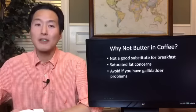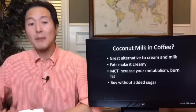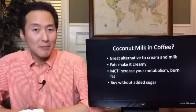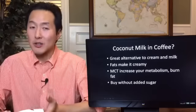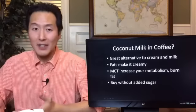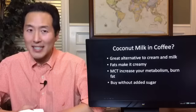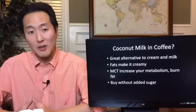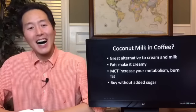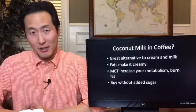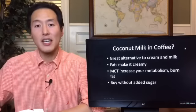And because there's fat in it, you do want to avoid it if you have gallbladder problems, because this could potentially cause those to worsen. Well, what about coconut milk and coffee? If this isn't something that you've tried, I encourage you to try a little bit of coconut milk in your coffee and see what you think. So coconut milk is a great alternative to cream and milk. The fats, it's filled with saturated fats, and those fats can really help make your coffee nice and creamy and give it a bit of a coconut flavor, which a lot of you may like. And coconut milk actually has medium-chain triglycerides, like that Brain Octane that I mentioned earlier with Bulletproof Coffee. And these medium-chain triglycerides can really increase your metabolism and help you burn fat. And you want to buy the coconut milk without added sugar. Now, I made this mistake myself as I actually once bought coconut milk and it had added sugar to it. So look for the carton and make sure that there's no added sugar in your coconut milk.